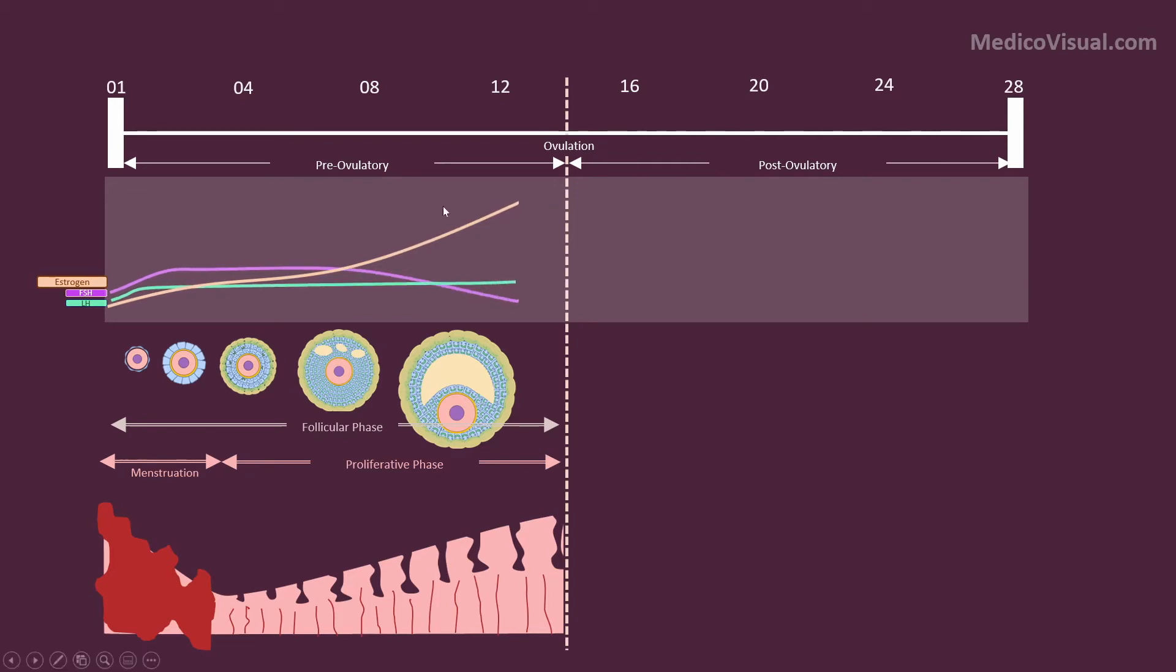Due to the rise in estrogen levels, there is a slight decline in the level of FSH, but LH level remains unchanged. As the level of estrogen reaches its peak, it causes a sudden rise in the level of LH—we call it LH surge. There is also a rise in FSH, the FSH surge, but that is not as significant.